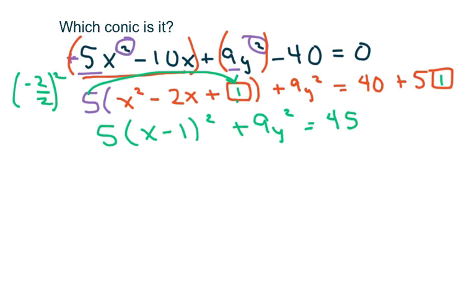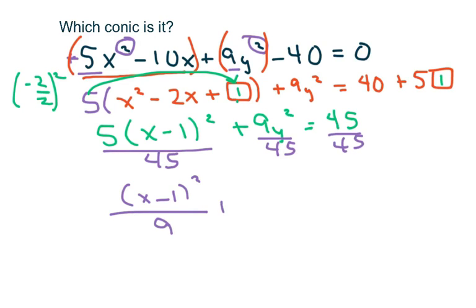Now remember we have to have a 1 here, so we're going to divide everything by 45. And then you're going to get x minus 1 squared over 9 plus y squared over 5 equals 1.